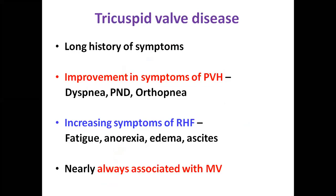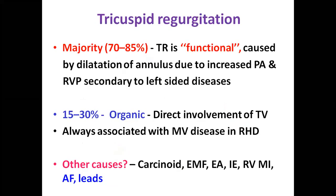Regarding tricuspid valve disease: patients usually have a long history of symptoms. There is improvement in symptoms of left pulmonary venous hypertension like PND and orthopnea, whereas symptoms of right heart failure increase — fatigue, anorexia, and edema. Tricuspid regurgitation is most often functional, caused by dilatation of the annulus — whenever RV or PA pressure exceeds 55 mmHg, TR starts appearing. In 15 to 30 percent it may be organic due to direct involvement of the tricuspid valve — always associated with mitral valve disease in rheumatic heart disease. Atrial fibrillation and pacing leads can also cause significant TR.